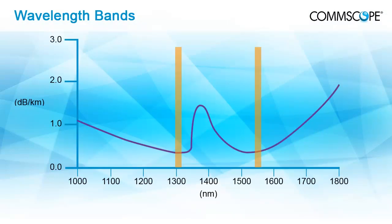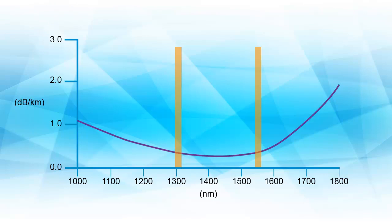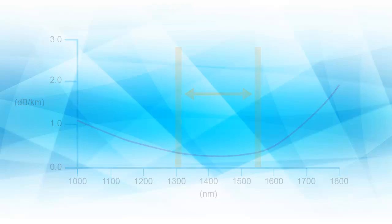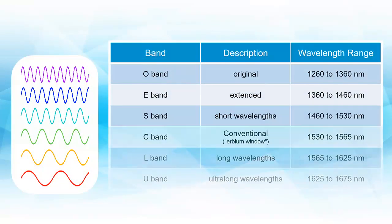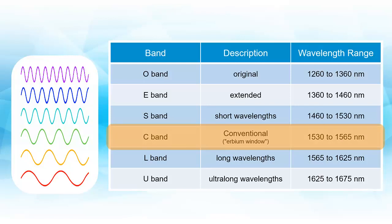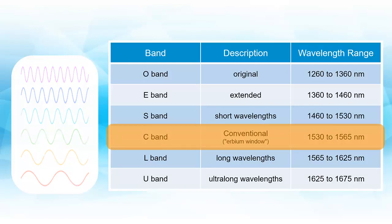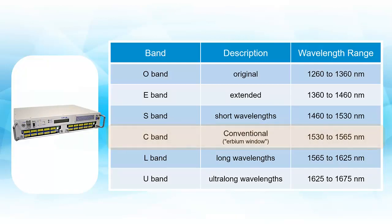Over time, improvements in fiber optic manufacture have removed the water peak from the spectrum, resulting in a continuum of frequencies that can be used for fiber optic transmission. This continuum is subdivided into bands. The C band is of particular interest in that it is an area of spectrum where erbium-doped fiber amplifiers are implemented. This technology allows direct amplification of light without an intermediate conversion to electrical energy.